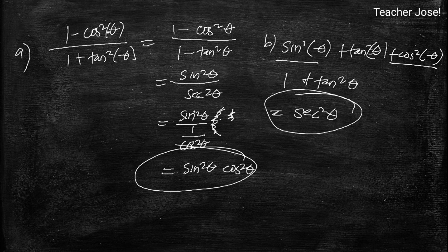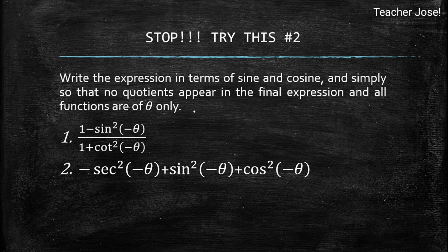Please answer at home — Stop and Try number 2: write the expression in terms of sine and cosine and simplify so that no quotients appear, with all functions of theta only. Number 1: 1 minus sine squared negative theta plus 1 plus cosine squared negative theta. Number 2: negative secant squared negative theta plus sine squared negative theta plus cosine squared negative theta. This is a prerequisite, so study this before moving on. Thank you for tuning in, please comment your answers, and God bless.